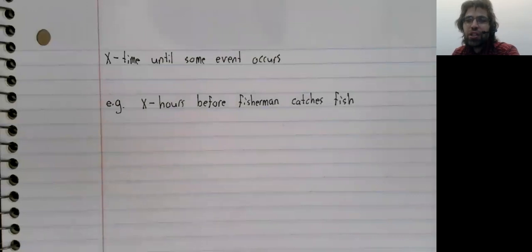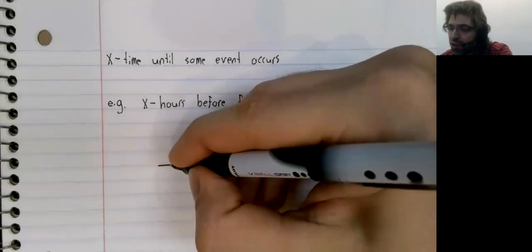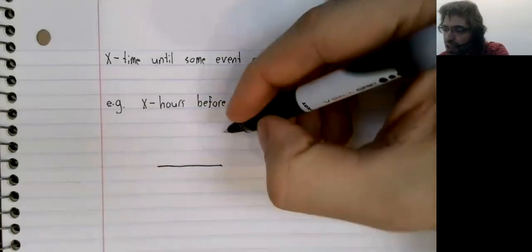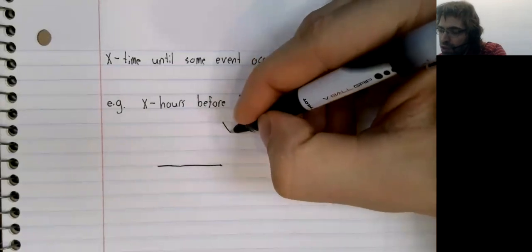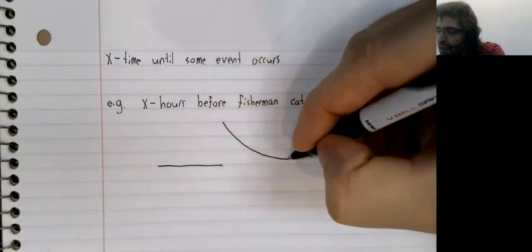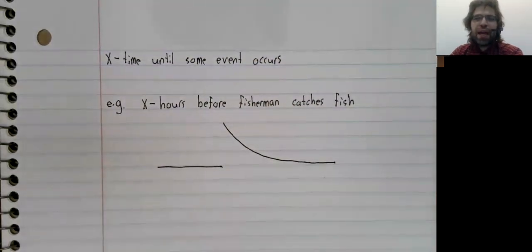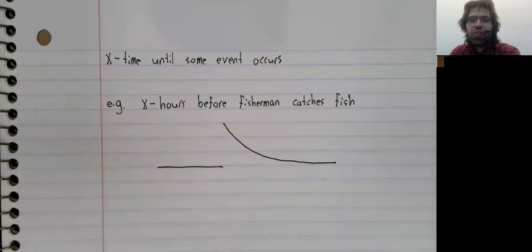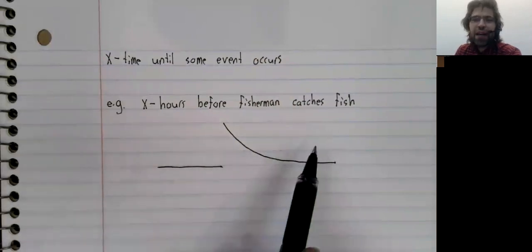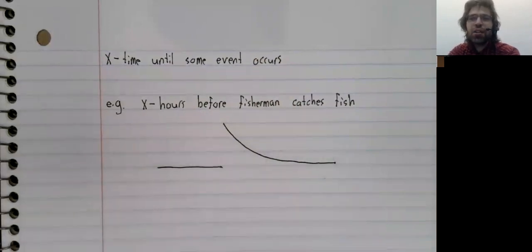In situations like that, where the event is memoryless, that is to say the probability isn't changing with time, we have the probability density function of the previous page, the graph that looks like that.